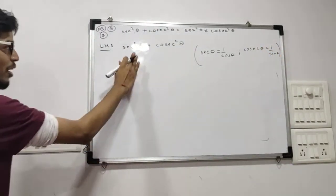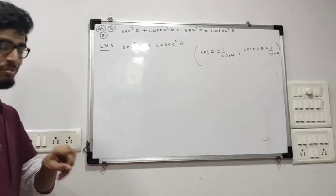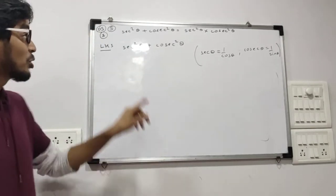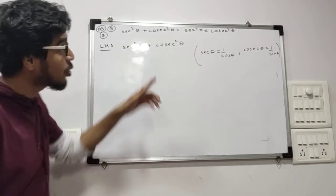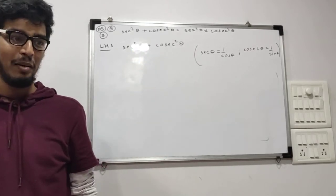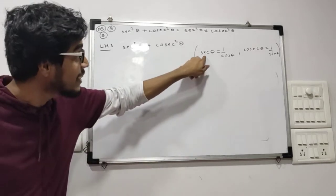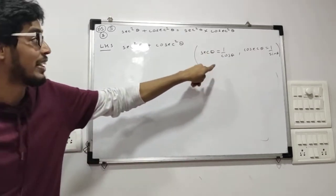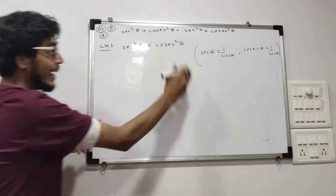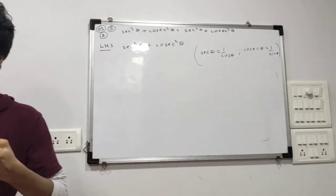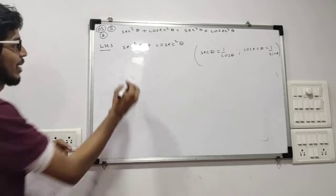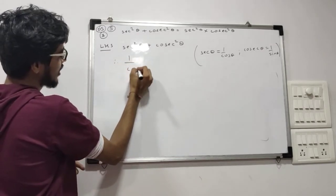Here we have sec squared theta and here we have cosec squared theta. So can we convert sec and cosec into simplest form? Now this is sec theta equal to 1 upon cos theta, but what do we have in the question? Sec square! So if sec theta is 1 upon cos theta, what will be sec squared theta? It will be 1 upon cos squared theta.